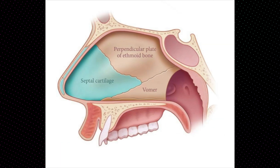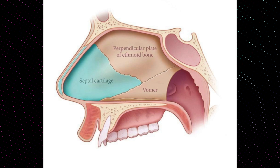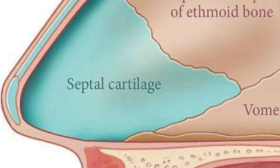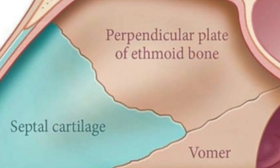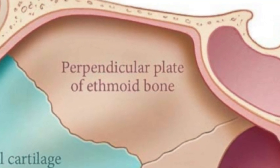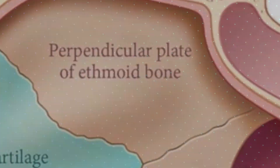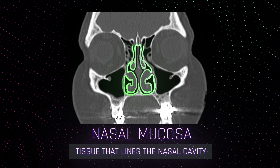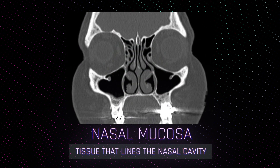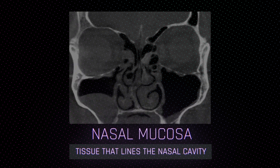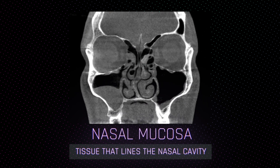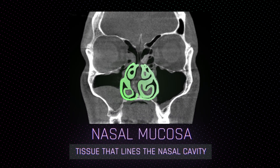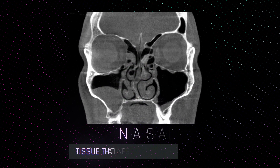The front or anterior portion of the septum is composed of cartilage, while further back or posteriorly it is composed of bone. The mucosa or lining over the bone and cartilage can be very thin when atrophic or very thick when inflamed from allergies and impacted by chronic nasal decongestant use.